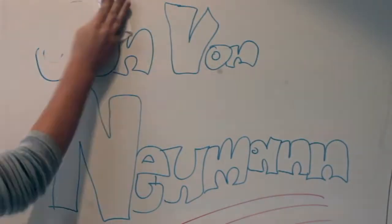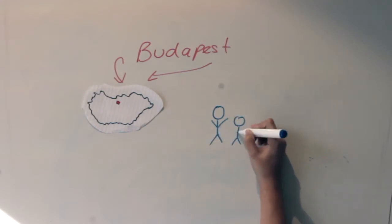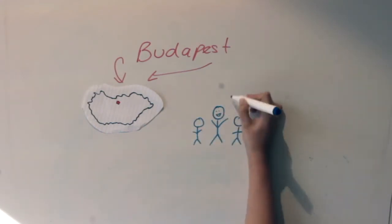John von Neumann was born on December 28th, 1903, in Budapest, Hungary. He was the eldest of three brothers and lived a normal, healthy life in Hungary.